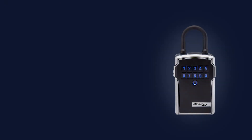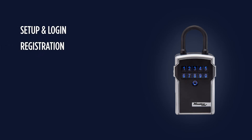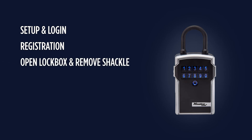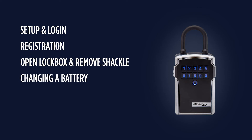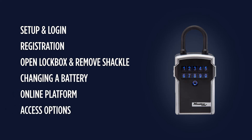In this tutorial you will first learn how to set up and log in to the Masterlock Vault Enterprise app. Then we will register your lockbox in the app and locate the sharing code so you can link the box with your BrokerBay account. I'll show you how to open the door and remove the shackle using both Bluetooth functionality and a primary access code, as well as how to change the battery. Finally we'll wrap up with some information about the online platform as well as access options should you need them.